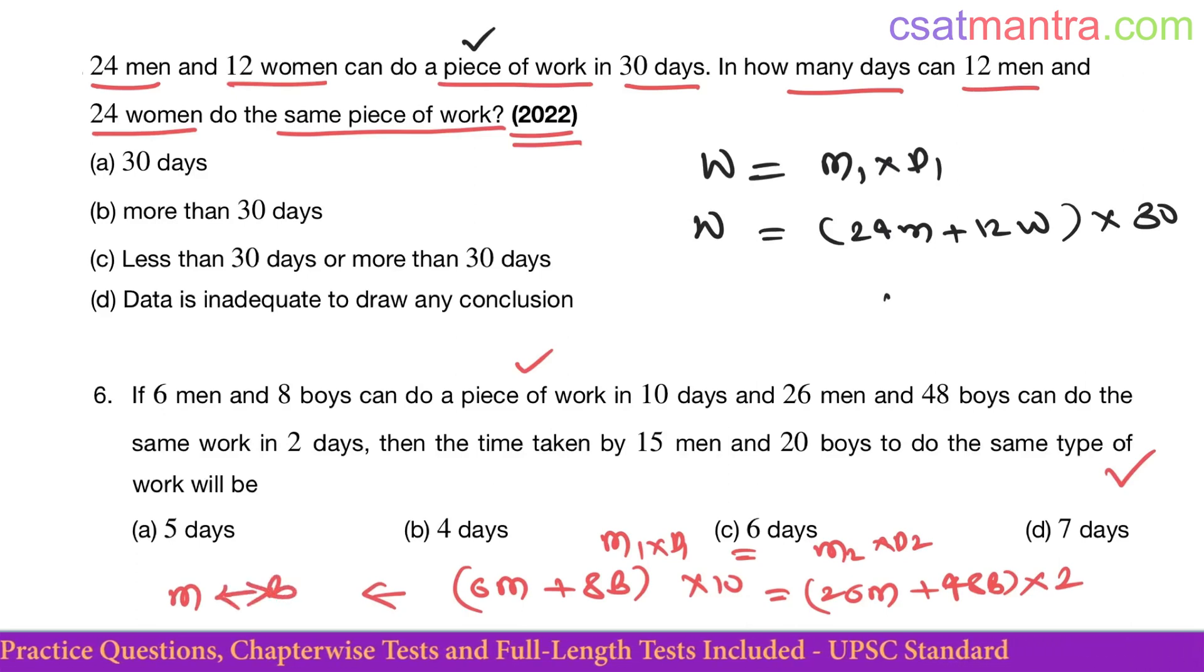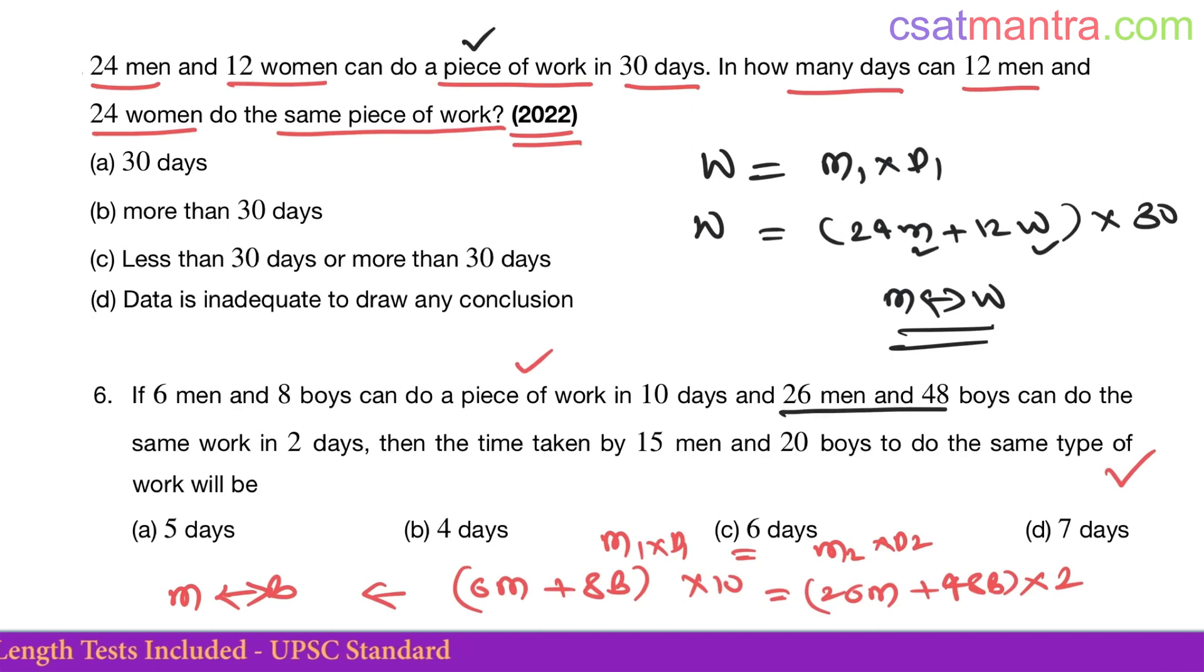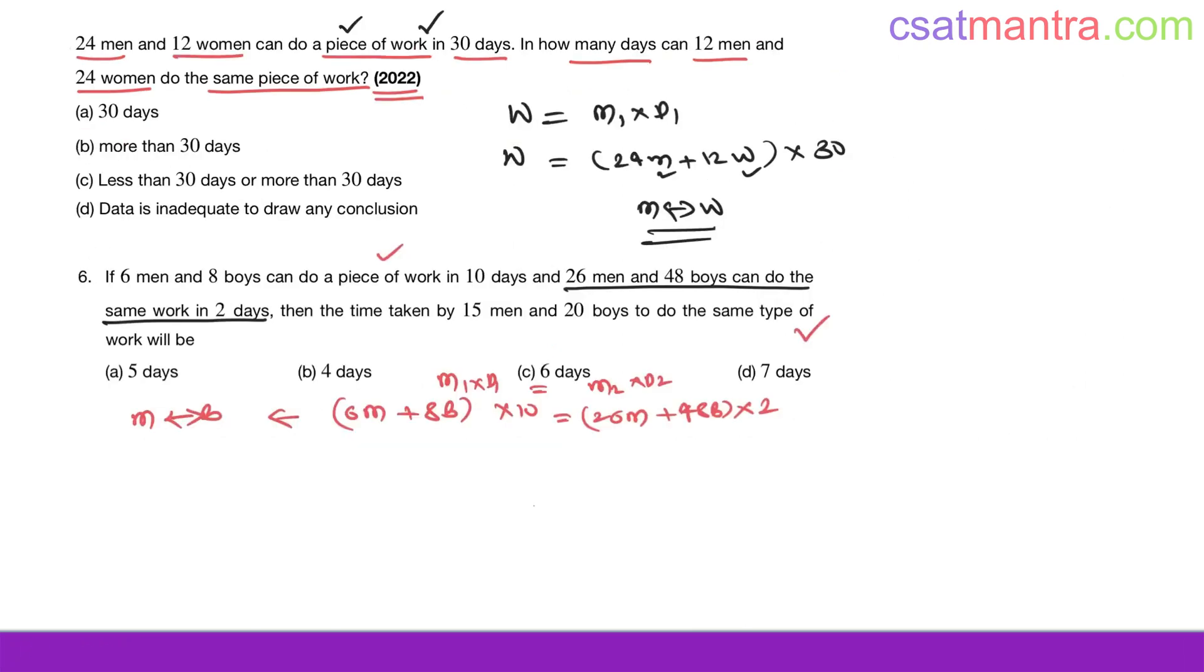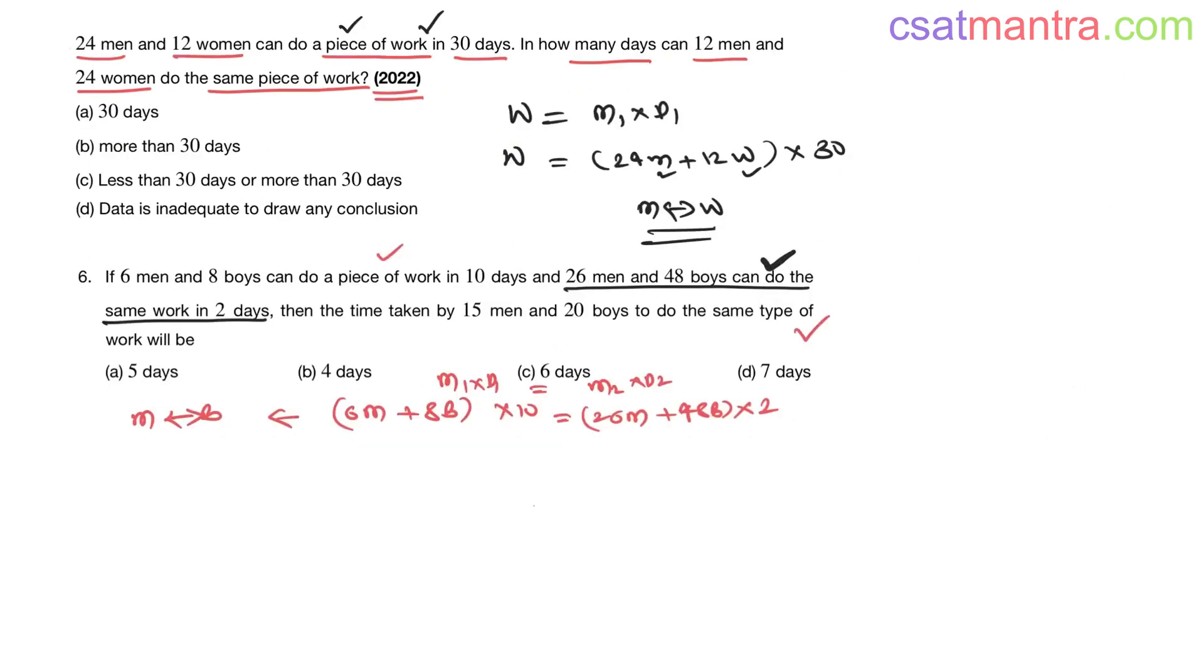In this problem we cannot get a relationship between m and w. To get that we need to have one more statement sentence like this, but here we have only one statement. So we don't have one more statement like this above.